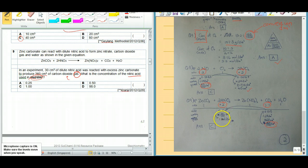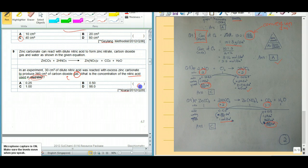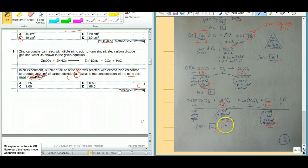So from there, now how do I get to find what is the concentration? Use your triangle. Given the mole, given the volume, you take your mole divided by volume, you can get your concentration. So 0.03 divided by 30 over a thousand, you'll get one mole per dm³. So answer will be C. Thank you.